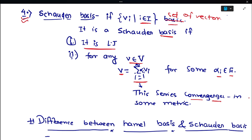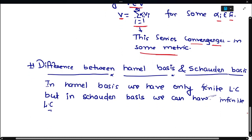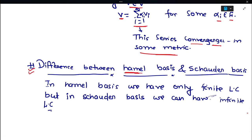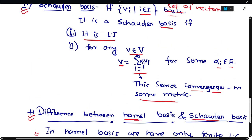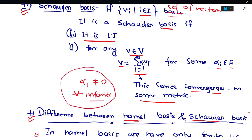Whenever convergence comes into picture, we have some metric on the data space. The key difference is: Hamel basis uses only finite linear combinations, whereas Schauder basis uses infinite linear combinations that converge in the vector space for some scalars. In the Schauder basis, α_i may not equal zero for infinitely many i, which is not the case for a Hamel basis.